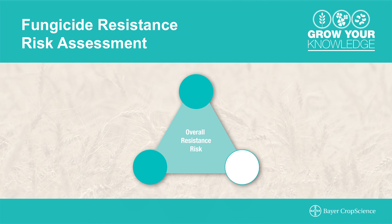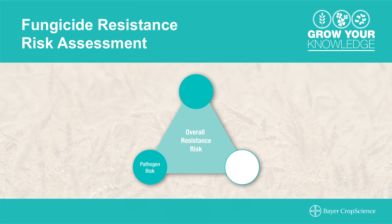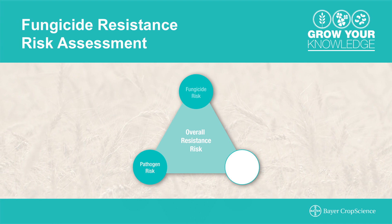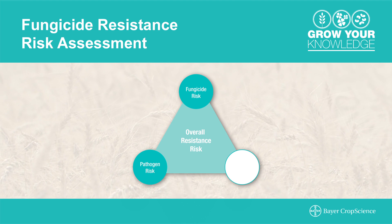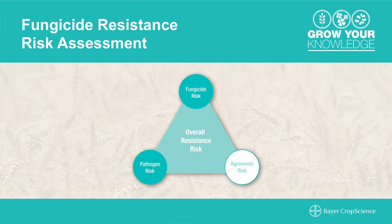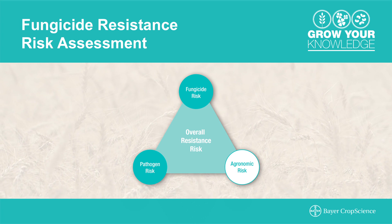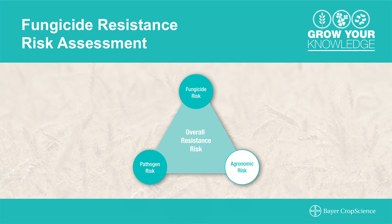When considering the potential for fungicide resistance, you have to consider three areas: the pathogen being targeted, as different pathogens have different risk factors; the fungicide mode of action, as the specific mode of action has different risk factors; and agronomic practices — there are certain things growers can do in their field to either increase or decrease the risk for potential fungicide resistance.